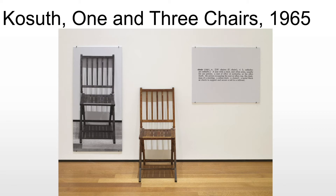Why? What is he trying to do? He's trying to get us to think about the best way to represent an object. Artistically, we would typically say a painting might be the best way to depict an object, second only to sculpture, which creates a three-dimensional image. But is that really the best way? Let's explore — for lack of a better term — 'chairness.'